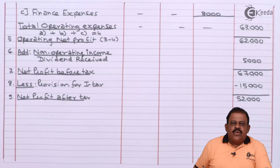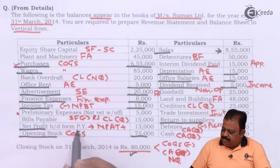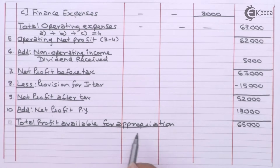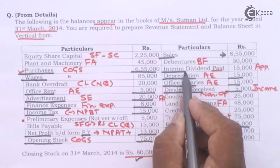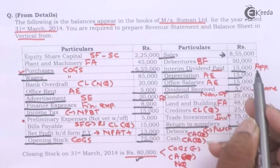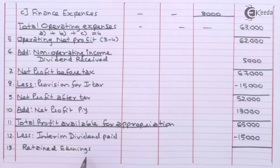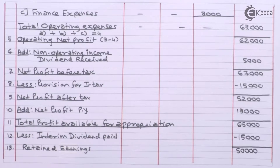To net profit after tax we add previous year's profit brought down to the current year: net profit of previous year is 13,000. Total profit available for appropriation is 65,000. Interim dividend paid 15,000 (part of appropriation). Retained earnings (surplus) are 50,000. This surplus will be transferred to the balance sheet under reserves and surplus. The vertical income statement is now complete.